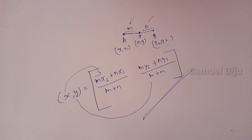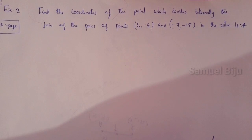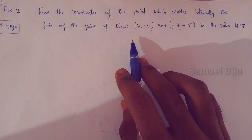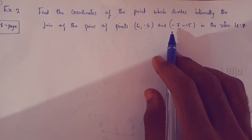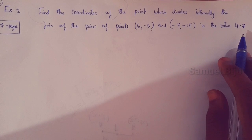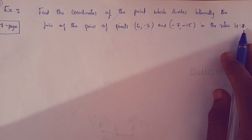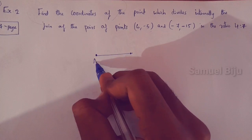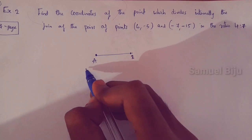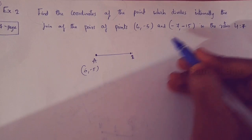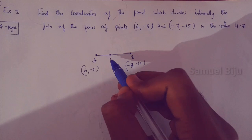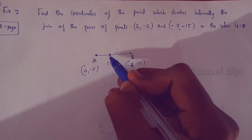Now we will talk about some point-of-view questions. Find the coordinates of the point which divides internally the join of the pairs of points. We have two points: A with coordinate (6, -5) and B with coordinate (-7, b). The dividing point is D with coordinate (x, y).